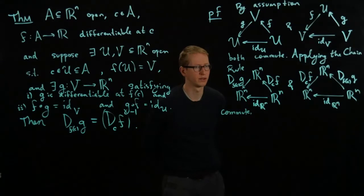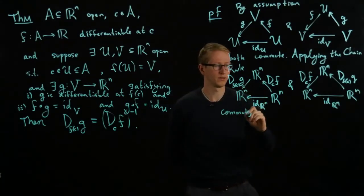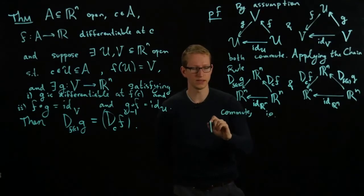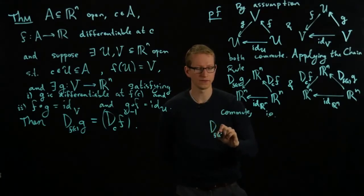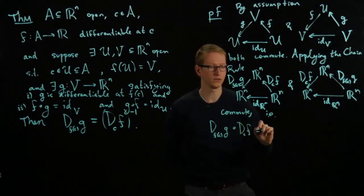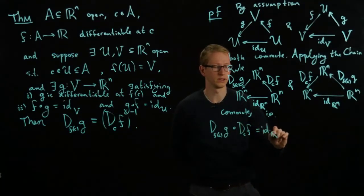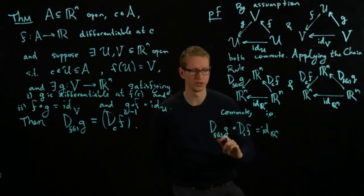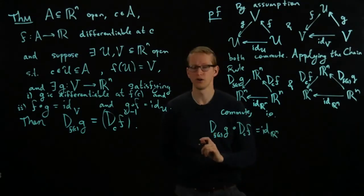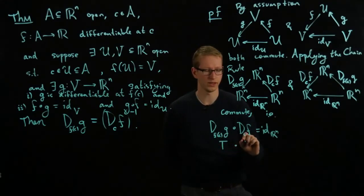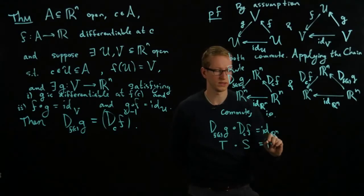What does that mean? Well if I look at just what each of these diagrams mean separately, this says that D, F, C, G composed with D, C, F is equal to the identity linear transformation. So think about this as one sort of object. If you wanted to we can call this linear transformation for example T and this one S. So this says T, S is the identity.